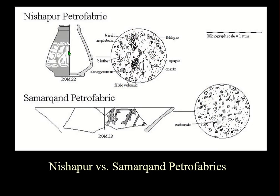Here are two of the major centers: Nishapur with a slip-painted ware and Samarkand with another slip-painted ware — very different fabrics. It would be very easy to distinguish between the Nishapur fabric filled with volcanic rocks and the Samarkand fabric filled with fine silty sediment appropriate to the broad alluvial plain it's built upon.